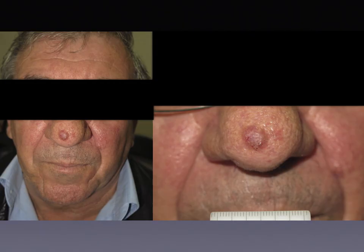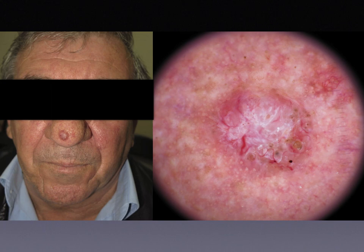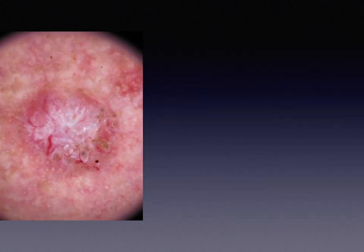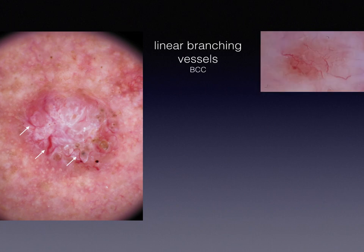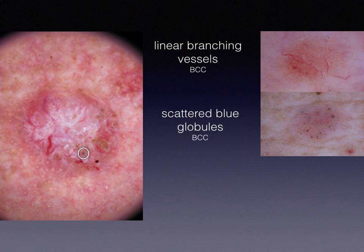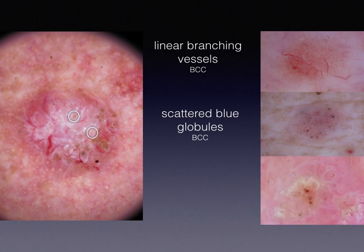Let's look at a couple of examples. The first is a nodule on the nose. On dermoscopy, we can see linear, arborizing branching vessels — a BCC clue — and also at least one blue globule or blue dot, again a basal cell carcinoma clue. But in the upper part of the tumour, we can see follicles surrounded by white color — white circles surrounding follicles — which is a classic clue of squamous cell carcinoma.